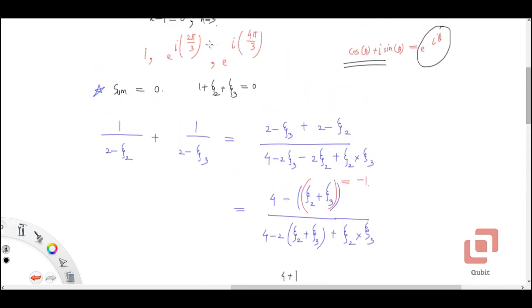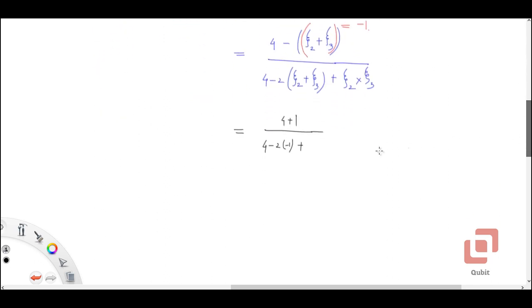Now, if we multiply e^(i·2π/3) and e^(i·4π/3), then we will get e^(i·6π/3) which is e^(i·2π), and that is cos(2π) + i·sin(2π) which is 1. So the last term is 1. So now we have 5 upon (4 + 2 + 1), that is 5 upon 7.